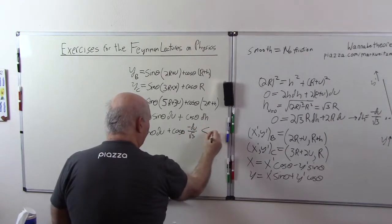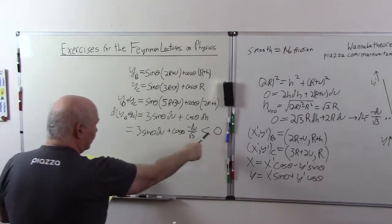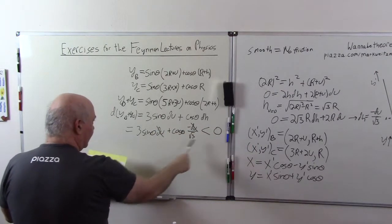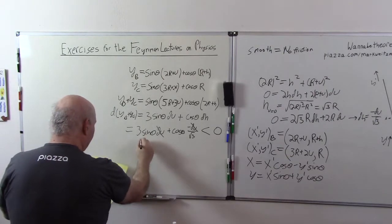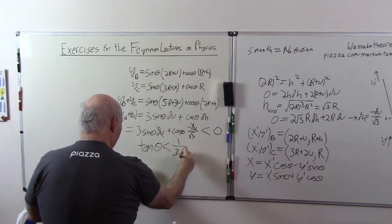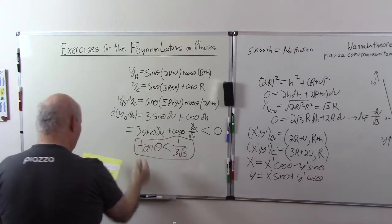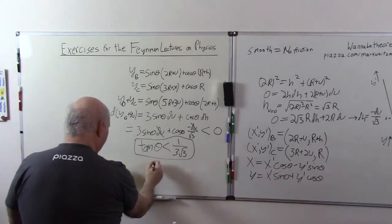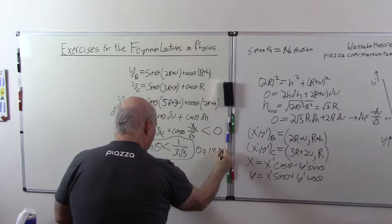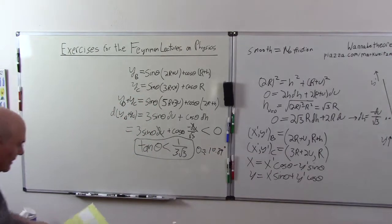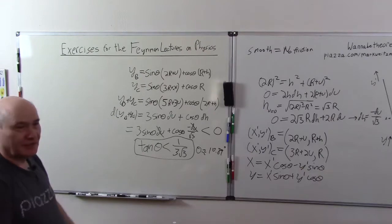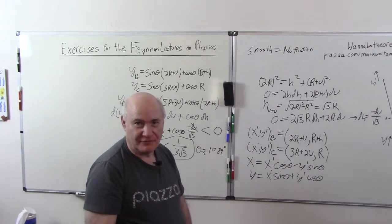And this has got to be less than 0. That leads to: putting this on the other side, the du's cancel — they're both positive — divide by cosine theta, move the 3 over, and we get our answer: tan theta is less than 1 over 3 times the square root of 3. And if you actually calculate this, you'll get theta is approximately 10.89 degrees. So I invite you to go to the website for this problem and look at the other solutions and decide whether mine is easier than theirs or not. Thank you very much, I'll see you for the next video. Bye.